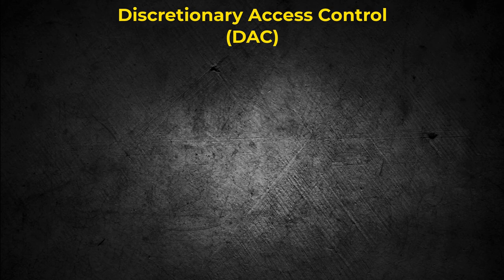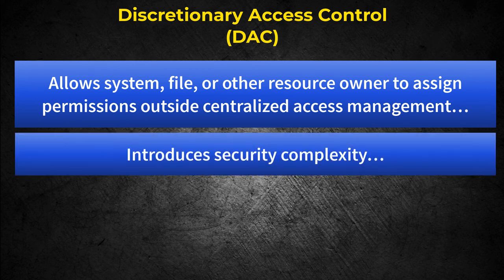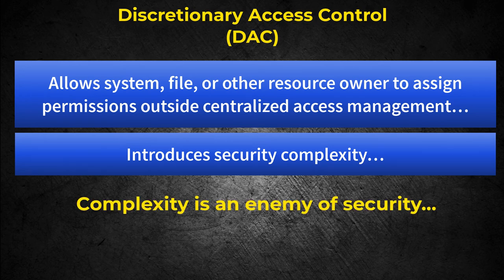Discretionary access control, or DAC, available out of the box in solutions like the Windows operating system, allows the system owner to decide who gets access to a system and allows the creator of a file to decide who gets access to that file. It's a decentralized approach to managing access control, introducing complexity for medium to large organizations, potentially bypassing protection dictated by data value and sensitivity. A small business with a handful of users is likely a good candidate for DAC, eliminating the need for assigning or hiring an administrator to manage access.